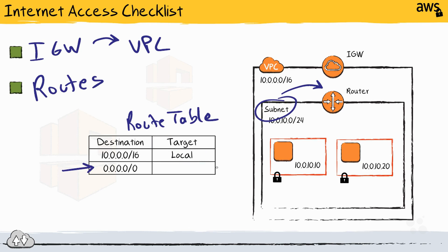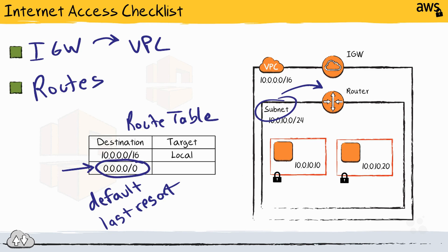After that, we have a special route that goes by a lot of different names — some call it the default route, the route of last resort, or the default gateway. The address pattern 0.0.0.0 is a wildcard; it matches all other potential destination addresses. In our route table, we need to make sure that default route points to the internet gateway. This is the logic that says if traffic is not destined for something in the VPC, send it out the internet gateway. You can meet all of the other checklist requirements, but if you don't have this route configured correctly, none of it will work.